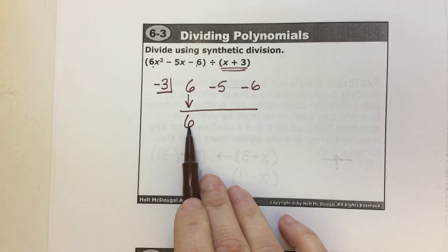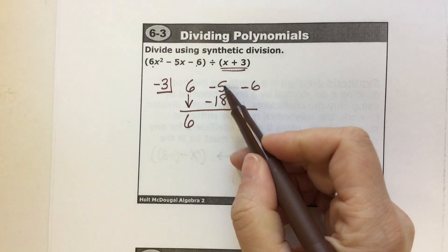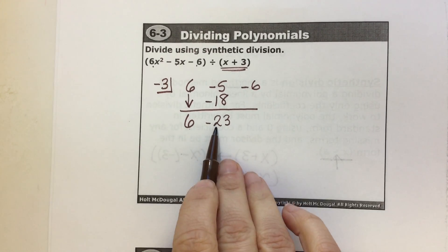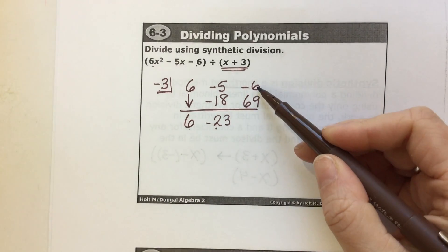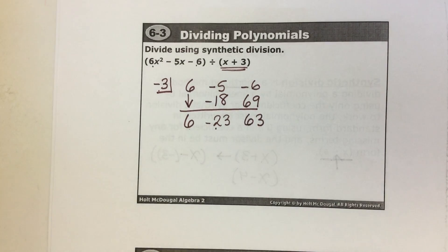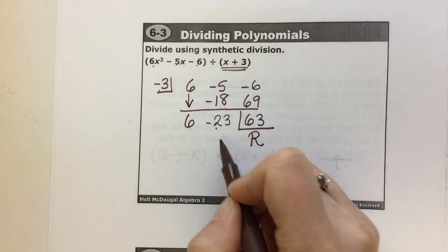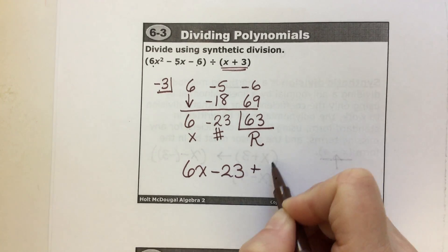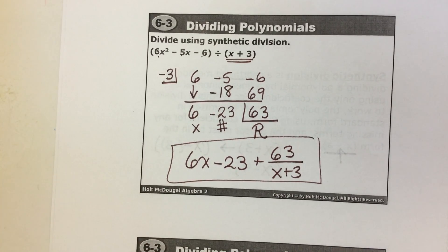Drop down 6. 6 times negative 3 is negative 18. Negative 18 plus negative 5 is negative 23. Negative 23 times negative 3 is 69. Negative 6 plus 69 is 63. The last number, 63, is the remainder. Next to that is our constant, negative 23, then that would have 1x. So our quotient is 6x minus 23, with a remainder of positive 63 over x plus 3. You just divided using synthetic division.